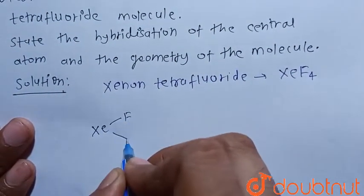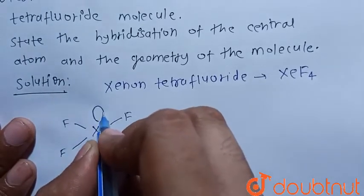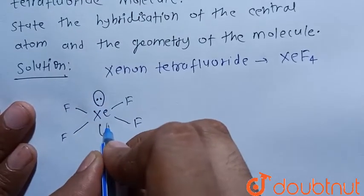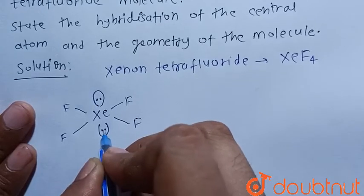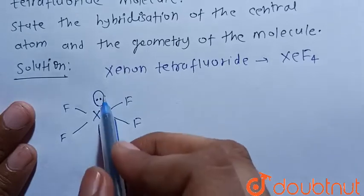We know that xenon has eight valence electrons. So its four electrons are shared with the formation of the covalent bond with the fluorine atom, and four electrons remain. Four electrons means two lone pairs.